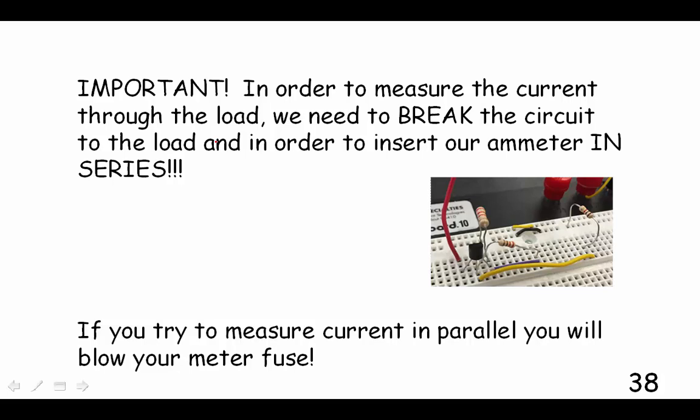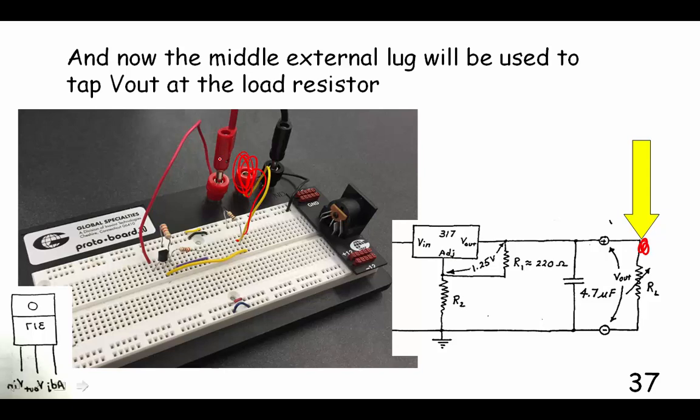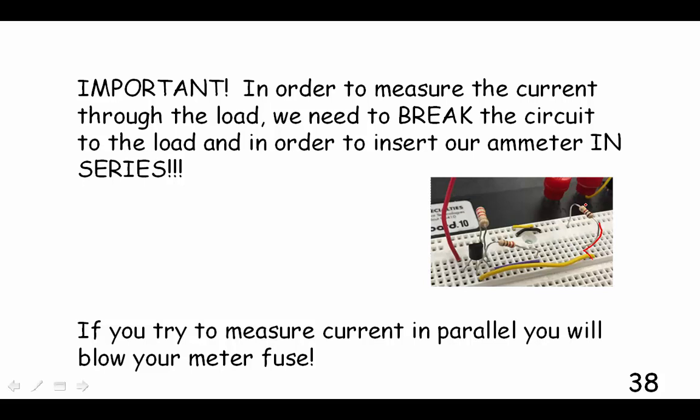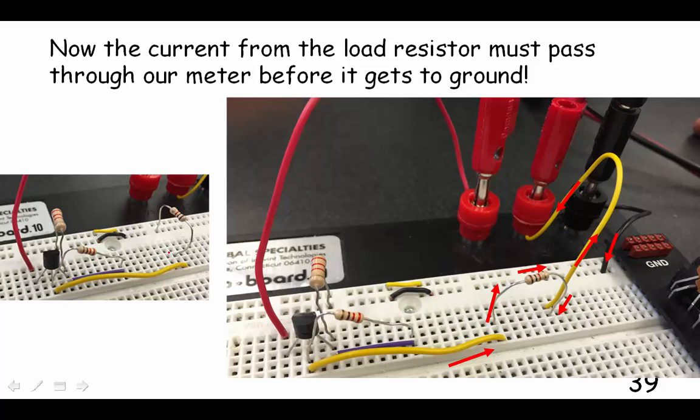So this will be our lug that we'll use when we want to measure the voltage the LM317 is putting out. Now, when we want to measure current, we're going to have to break this circuit, and this is what students often do wrong, is they'll put their meter in parallel with that resistor, and then it blows the meter. Because when we measure current, we don't put a meter in parallel, we have to put it in series. So we have to break this. In order to make that in series, we have to break the circuit.